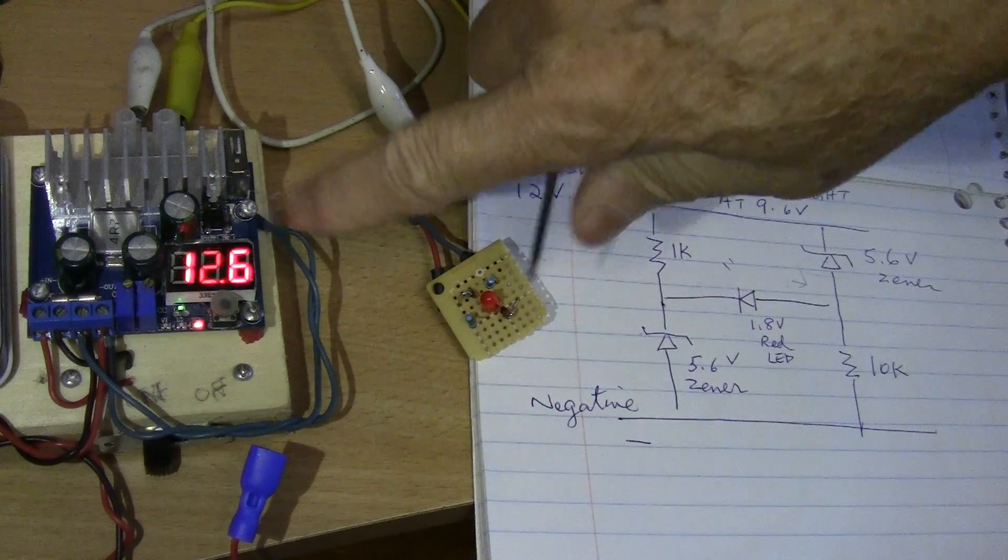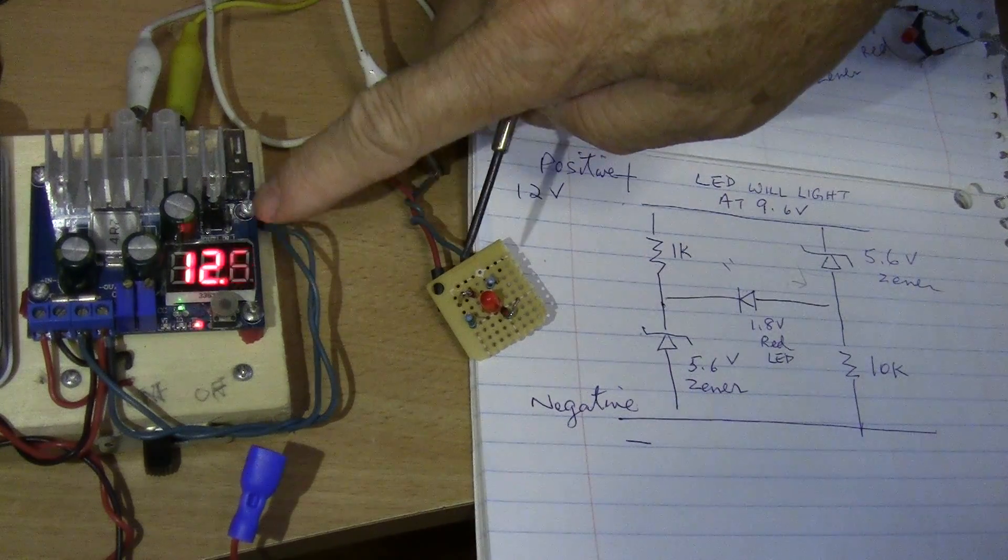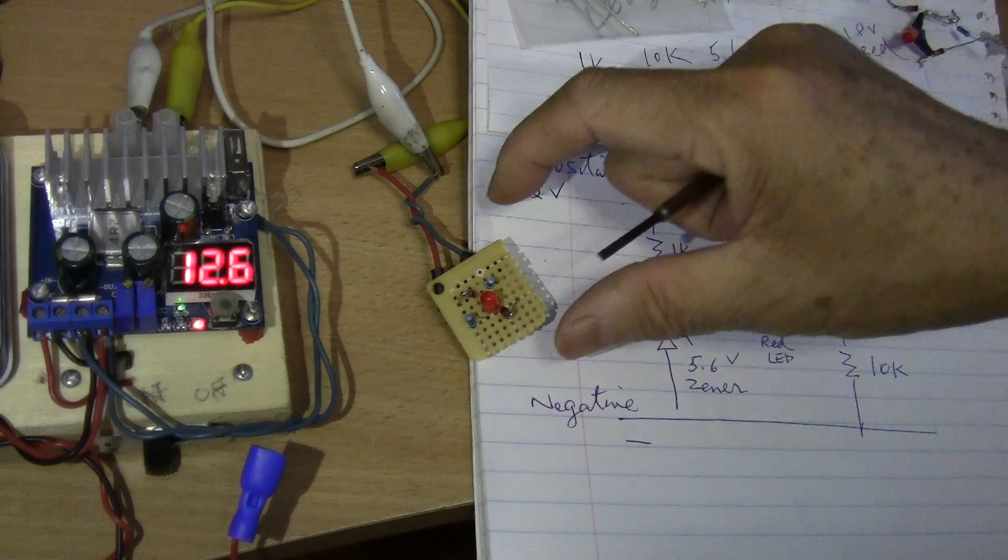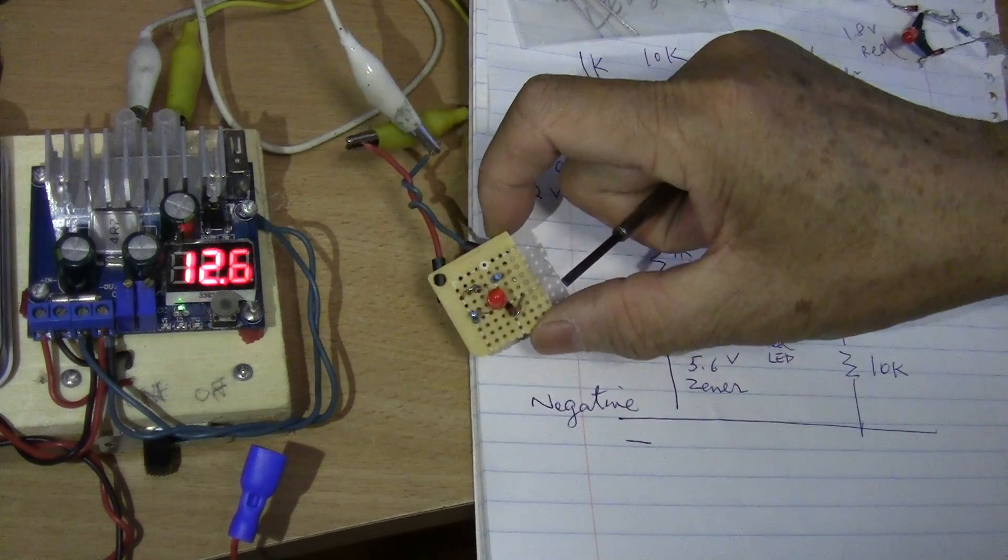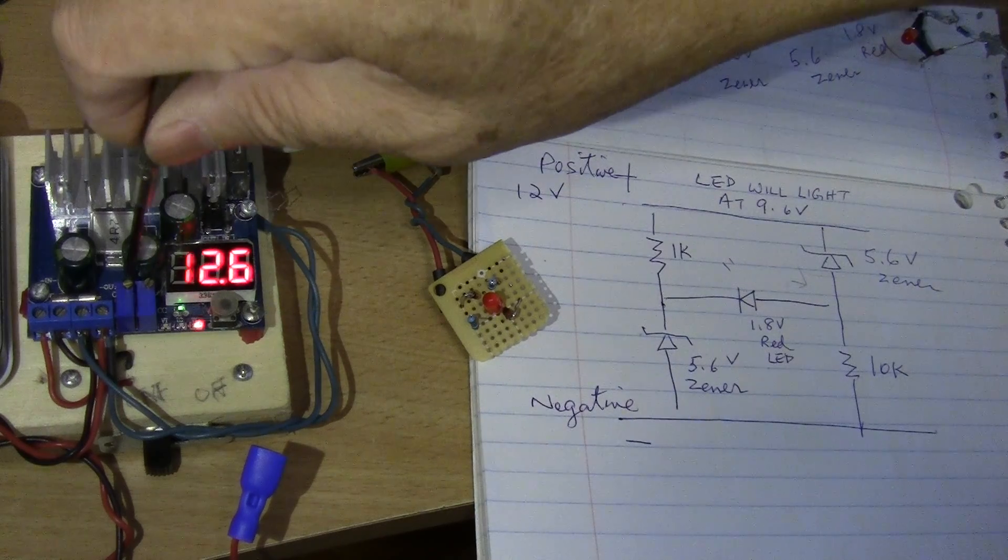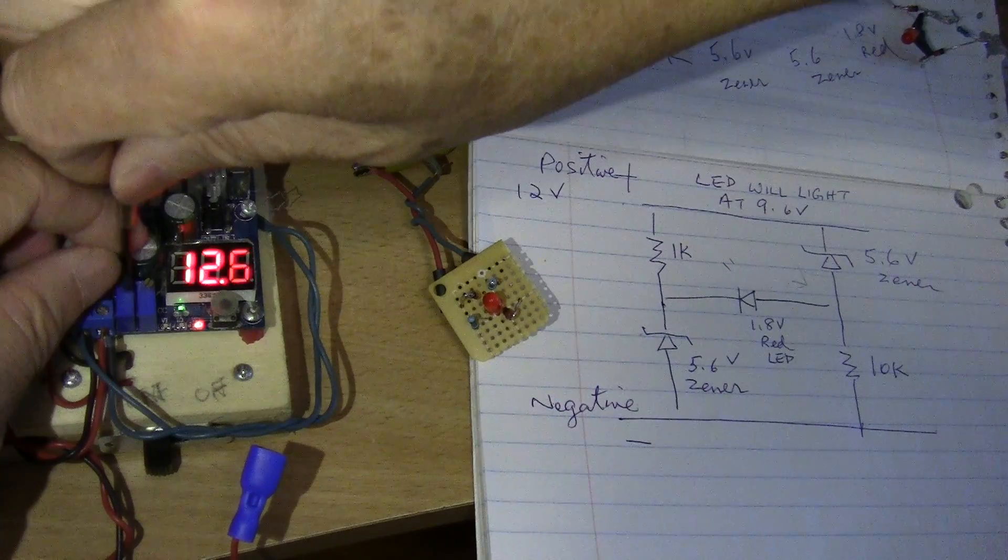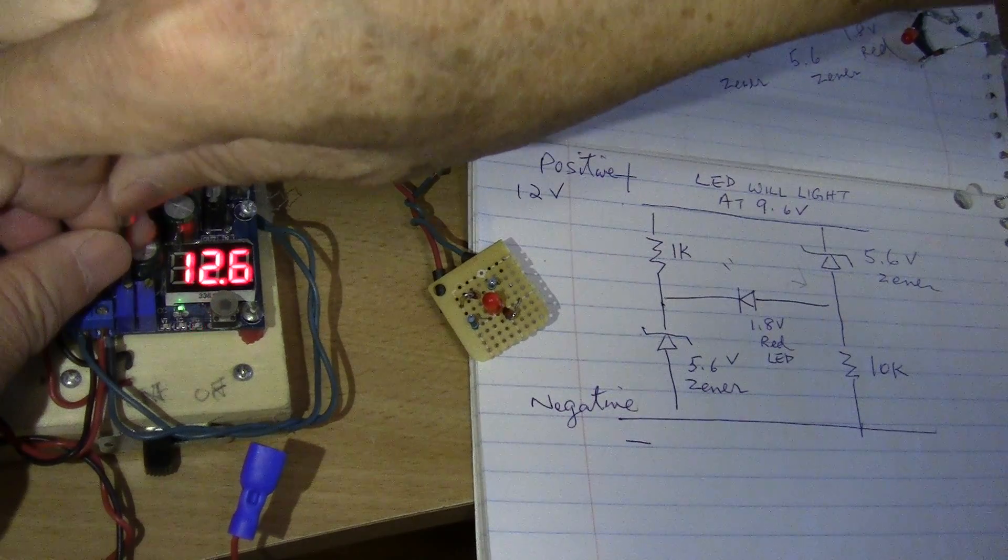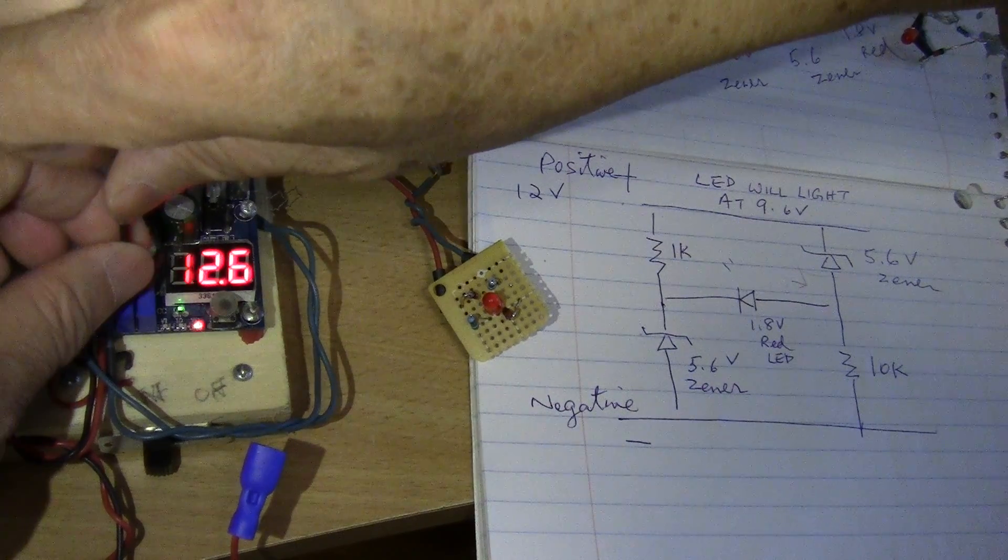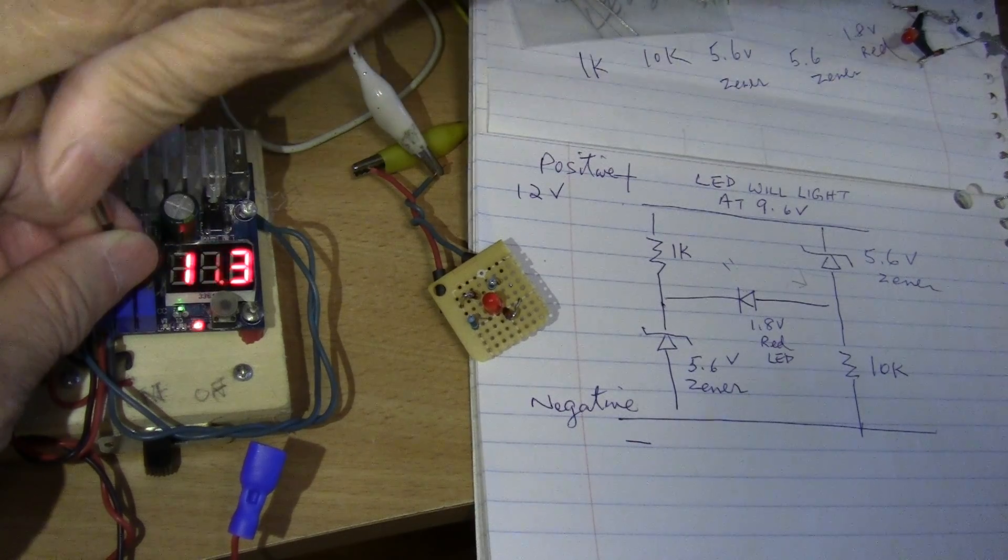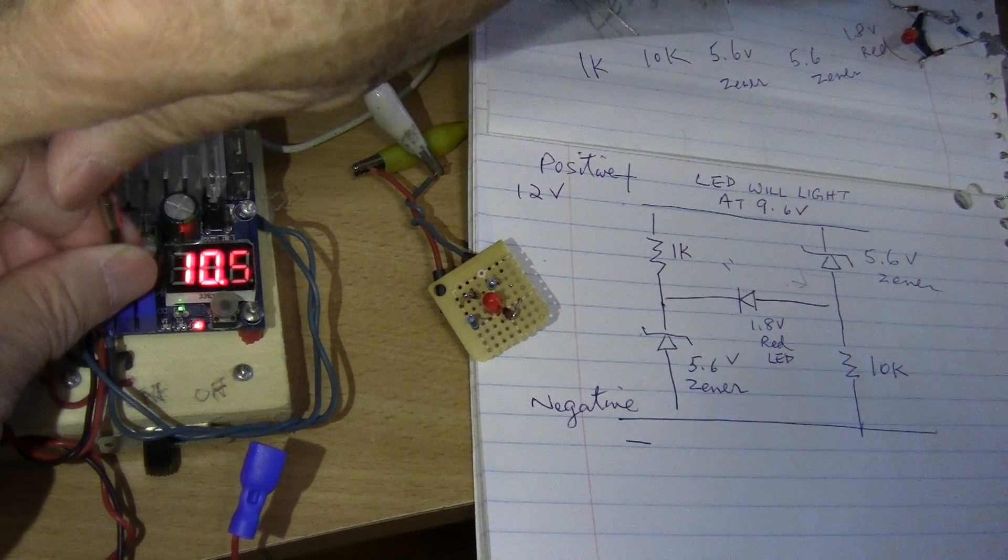So I have a power supply here currently at 12.6V. So it won't do anything, it is not lit. So I am going to lower the voltage and it is going to come on when the voltage reaches 9.7V.